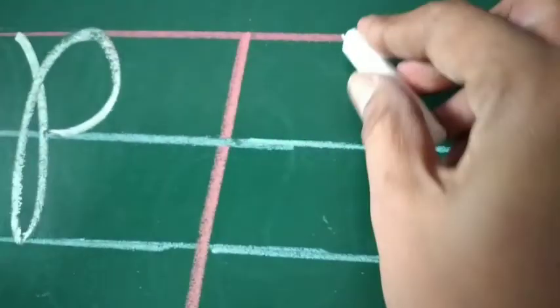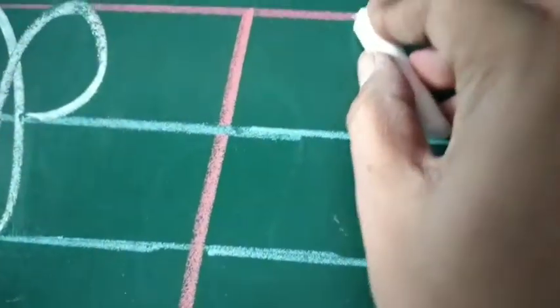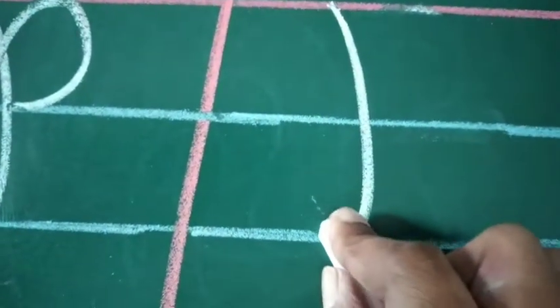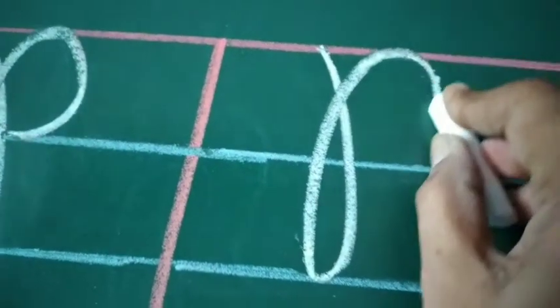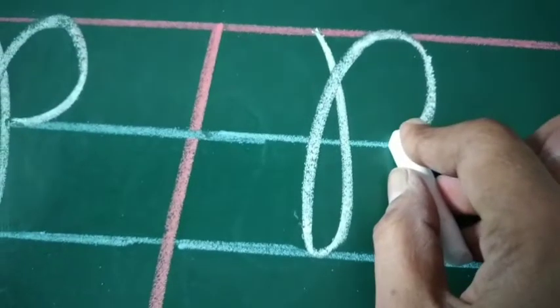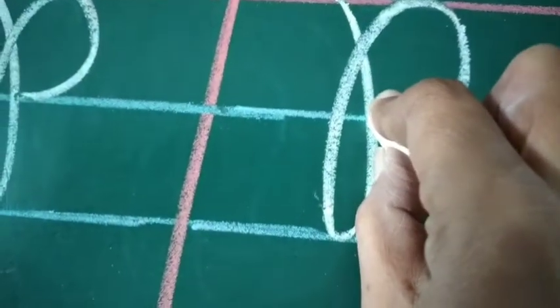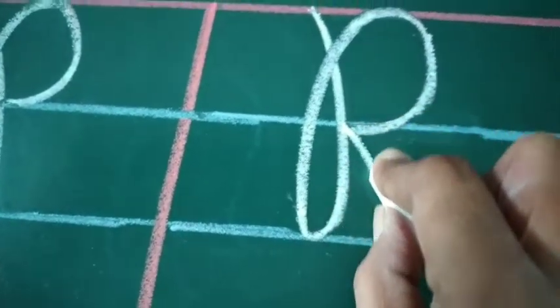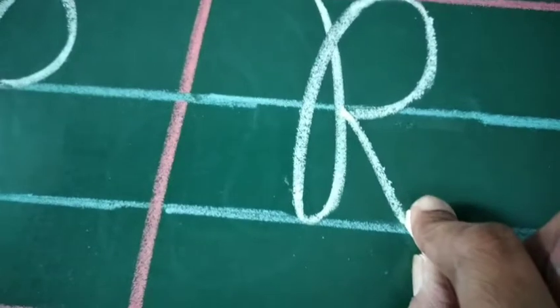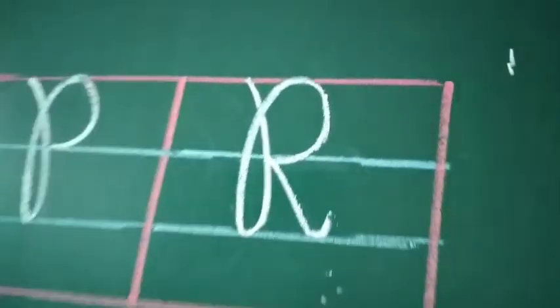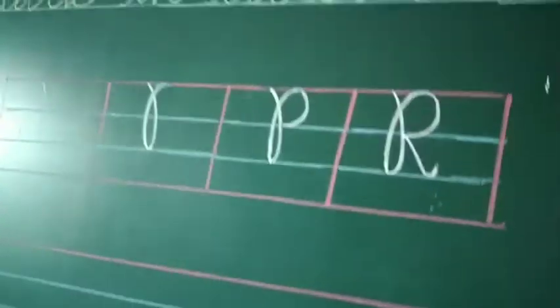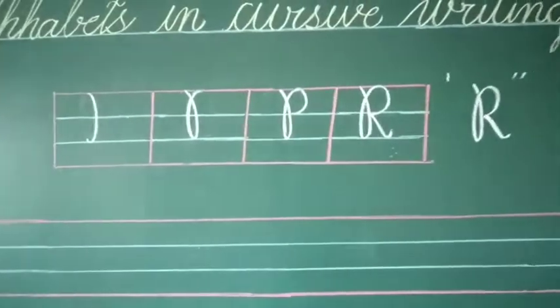And in the fourth part, what will we do? Do like this, take a small turn, go up to the first blue line, make a half circle, join it, make a slant line and take a little turn. Okay, so this is letter R.